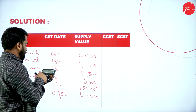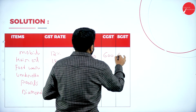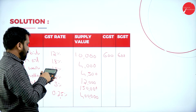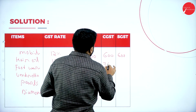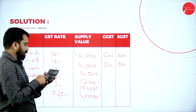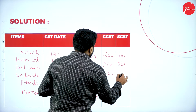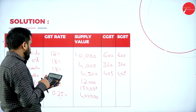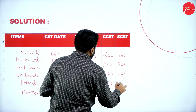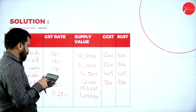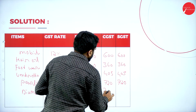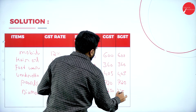Calculations: Mobile — 10,000 into 12 percent divided by 2 equals ₹600 and ₹600. Hair oil — 4,000 into 18 percent divided by 2 equals ₹360 and ₹360. Footwear — 4,500 into 18 percent divided by 2 equals ₹405 and ₹405. Umbrella — 12,000 into 12 percent divided by 2 equals ₹720 and ₹720. Pearls — 1,50,000 into 3 percent divided by 2 equals ₹2,250 and ₹2,250.